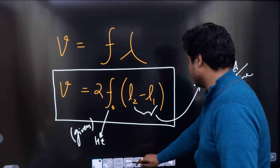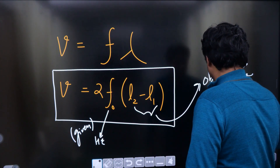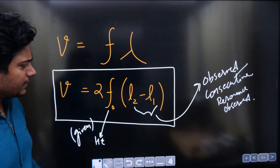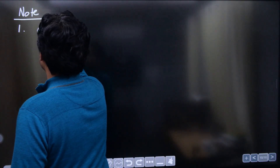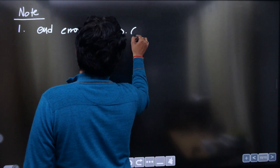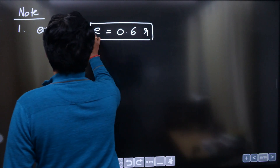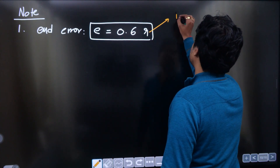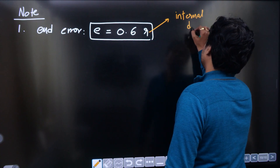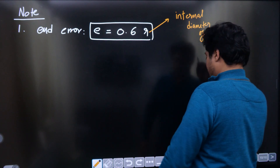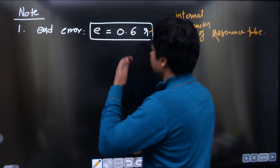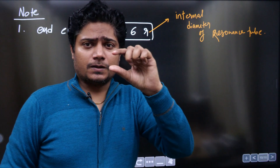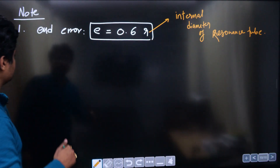l₁ and l₂ are consecutive resonances or consecutive maximas observed. Now, note number one: you can also determine the end error. The end error e is approximately 0.6 times r, where r is the internal radius of the resonance tube. You need to verify this using calculation — that extra distance depends on the diameter of the tube.